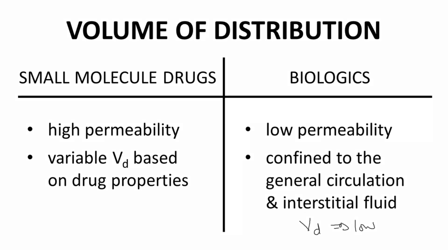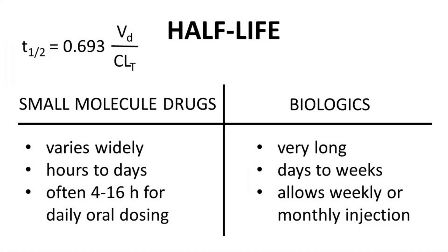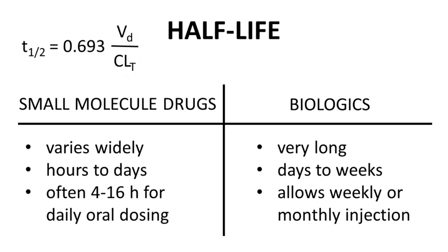Let's now look at half-life. The formula for half-life is in the upper left — half-life is determined from a molecule's volume of distribution and clearance. For small molecule drugs, both clearance and volume of distribution can vary, so half-life also varies widely, ranging from an hour or less up to days. A once-daily dose drug would typically have a half-life of 4 to 16 hours, but exceptions abound.